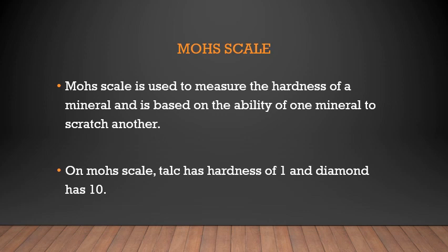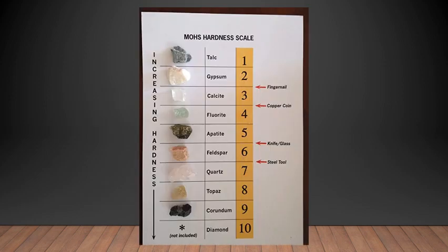The Mohs scale is used to measure the hardness of minerals and is based on the ability of one mineral to scratch the other. There are different kinds of minerals. For example, to cut glass we need a diamond, because diamond is the hardest mineral. On the Mohs scale, talc has a hardness of 1 and diamond has a hardness of 10.